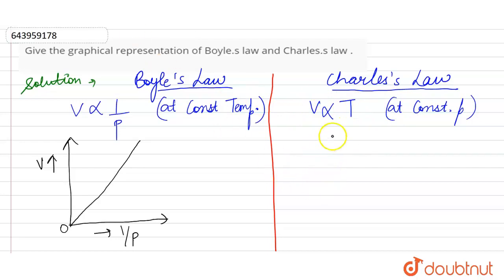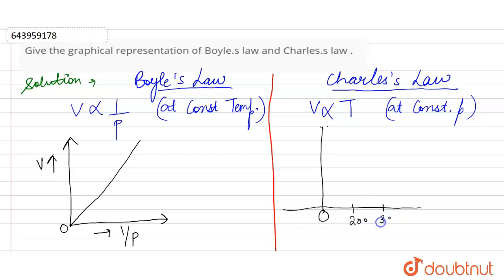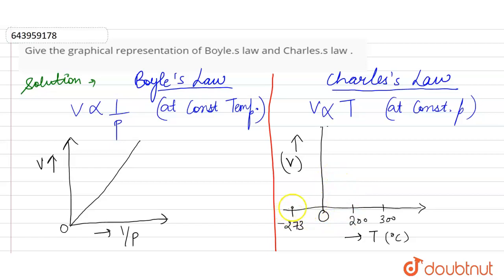The graphical representation for Charles' law shows the origin, with the temperature axis in degrees Celsius marked at minus 273, and the volume axis. The graph is intercepted on the temperature axis passing through the V axis, and can be drawn as a straight line.